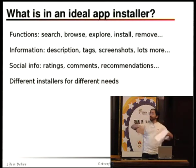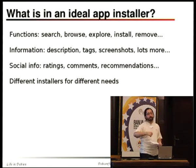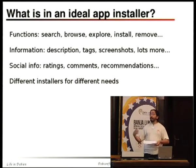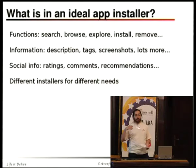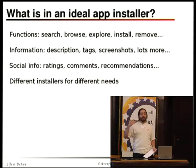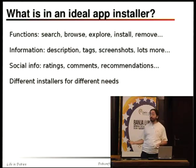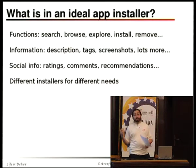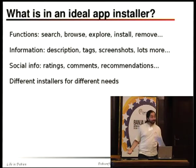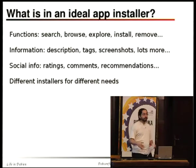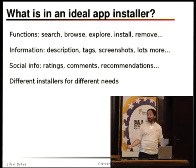It should support search, browse, explore, reinstall, remove — the usual things. It should have all sorts of information: descriptions, tags, screenshots, even more. We're now used to social information like ratings, comments, and package recommendations. There could be different installers for different needs — a user who wants graphical applications versus a developer looking for libraries for a specific programming language. You don't have screenshots of libraries, but you could show URLs to APIs. You don't want to clutter graphical interfaces with development library information.